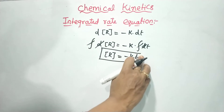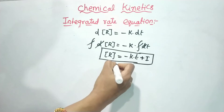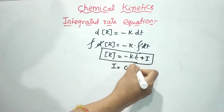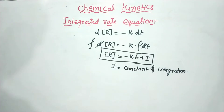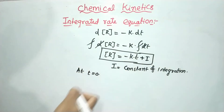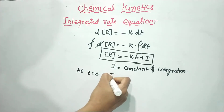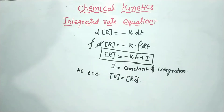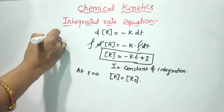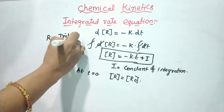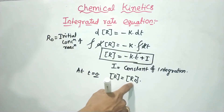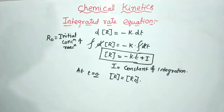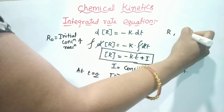We add a constant of integration. At t = 0, the concentration R is equal to R₀, the initial concentration of the reactant. Substituting t = 0 and R = R₀ into the equation, we get R₀ = minus k·(0) + i, so the constant of integration i = R₀.